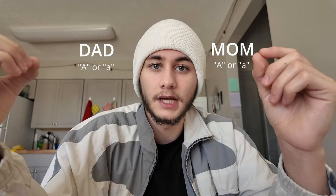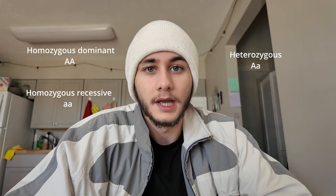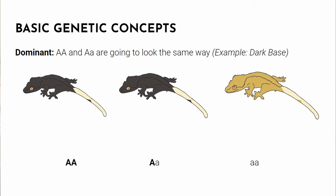A dominant gene is a gene that only needs one copy to express itself. When we have an individual, it carries one copy from each parent — either big A or small a from the dad, and either big A or small a from the mom. Combining these gives either big A/big A, small a/small a, or big A/small a. Big A/small a is heterozygous, while homozygous means the same allele on both — either homozygous dominant (big A/big A) or homozygous recessive (small a/small a). Individuals with big A/small a or big A/big A express a dominant gene, while small a/small a individuals do not express or carry it.